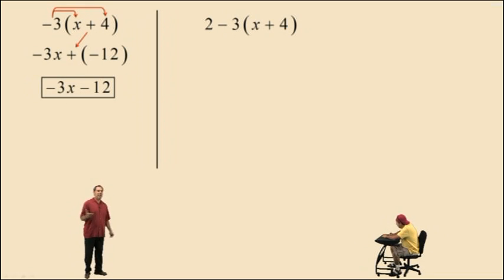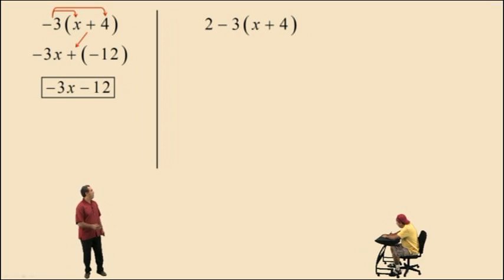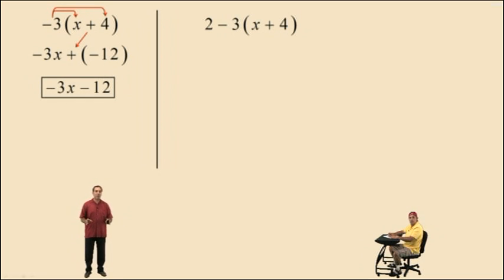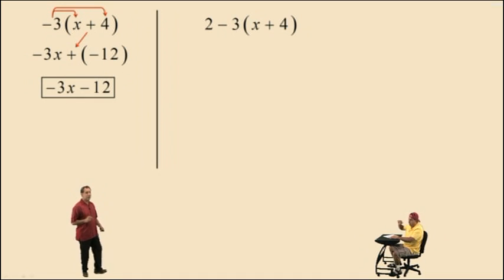Some of you might be asking: order of operations says to do parentheses first. Well, the problem is you have x plus 4 in the parentheses — those are not like terms. You cannot add x and 4. So what we need to do is apply the distributive property to get rid of those parentheses.